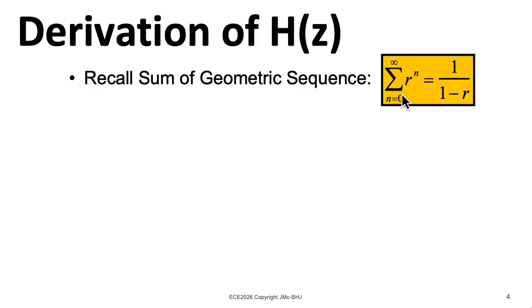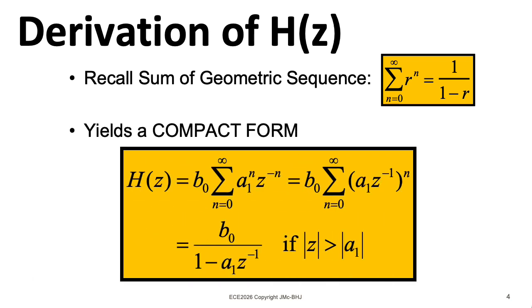Now we can apply this form for a geometric sequence, where we can take this sum from n to infinity of r to the n and rewrite it as one over one minus r to simplify our Z-transform summation here. So I can take the a_1 to the n, z to the minus n, and rewrite that as a_1 times z to the minus one, all to the power of n. Then I can equate the stuff in parentheses here with r and rewrite our Z-transform as b_0 over one minus a_1 z to the minus one.